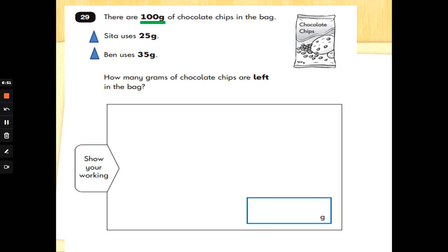So we need to work out how many chocolate chips are used all together. So we need to do 25 add 35, okay, because that's what has been used. So 25 add 35, or 25 add 5 is 30. 30 add 30 is 30, 40, 50, 60. Okay.